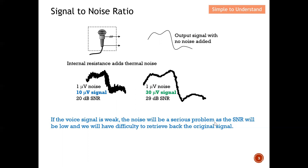If the voice signal is weak, noise becomes a serious problem because the SNR will be low, making it difficult to retrieve the original signal. If you speak softly into the microphone with the same noise level, you may not be heard clearly. But if you shout, the strong signal looks almost intact and you can be heard loud and clear.